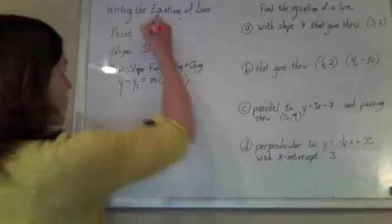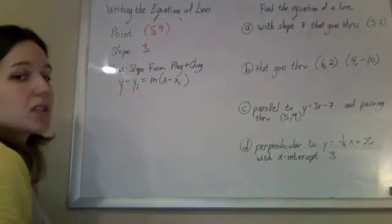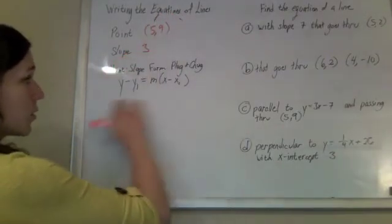And they gave us the point. It goes to the point 5, 9. We just have our point, have our slope. Plug them into point-slope form.